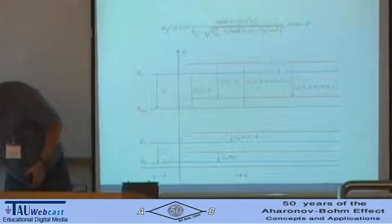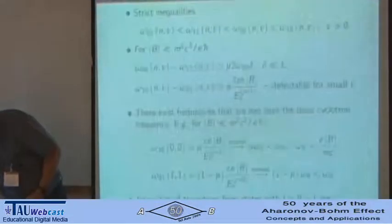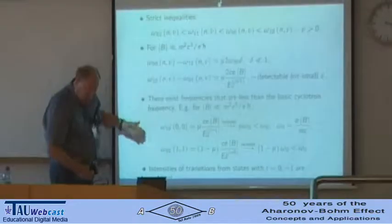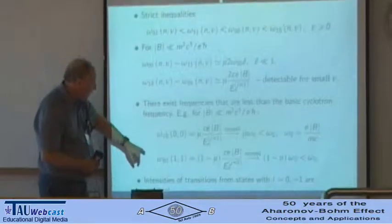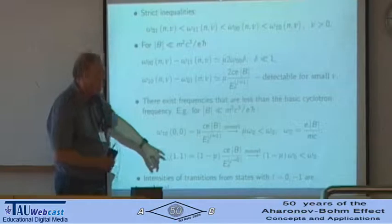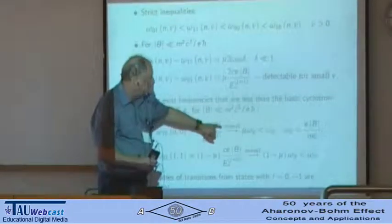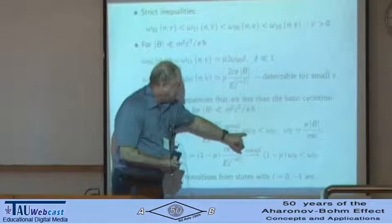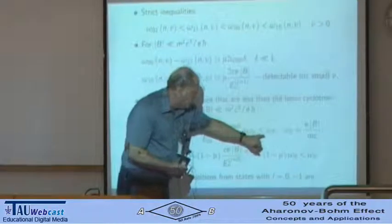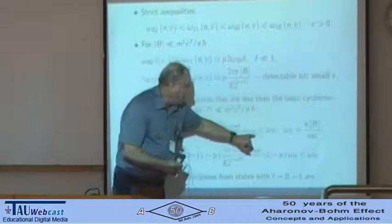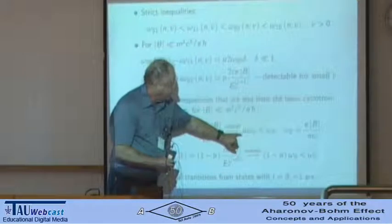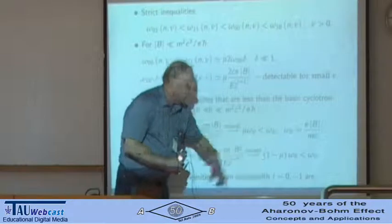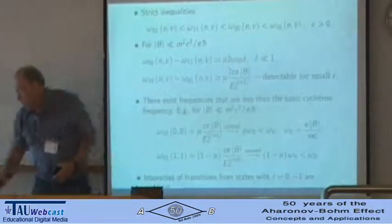This frequency can be evaluated. These super-low frequencies in the non-relativistic limit are proportional to the cyclotron frequency. One of the super-low frequencies is mu times omega-zero, and the other is (1 minus mu) times omega-zero.